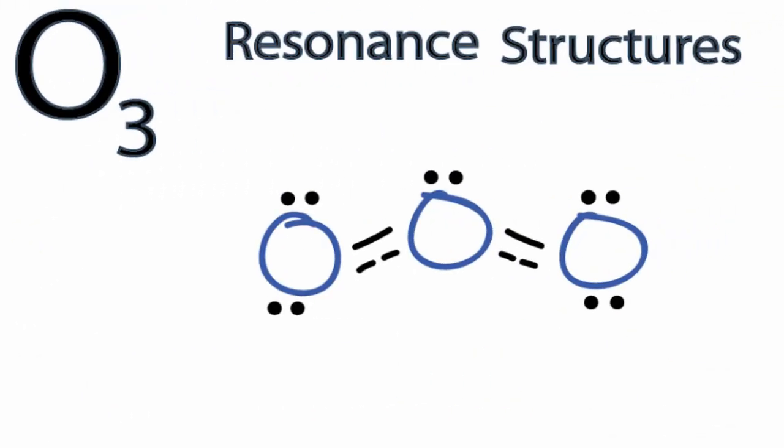So here, instead of a double and a single, we have two 1.5 bonds. You can see that dotted line means half a bond. So this is showing that average between the two resonance structures.